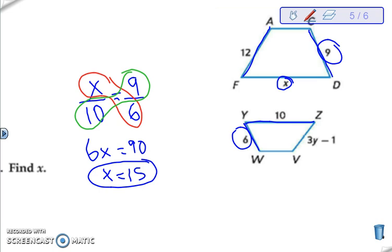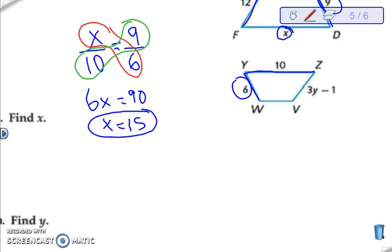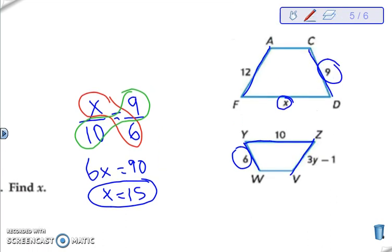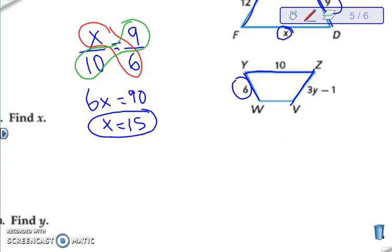All right, so we can do the same thing with y. We know that the V to Z matches up with A to F. So 3y minus 1 matches with the 12. So again, we need two corresponding sides of the other figure. We might as well use the 6 and the 9 again, but this time we need to flip it around, right? Because the 6 comes from the smaller figure, as does the 3y minus 1.